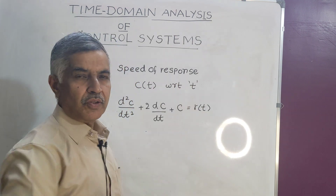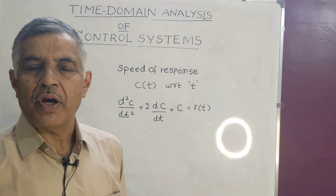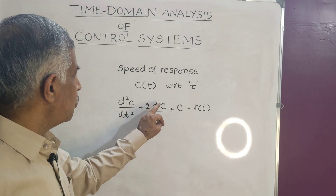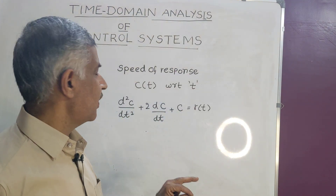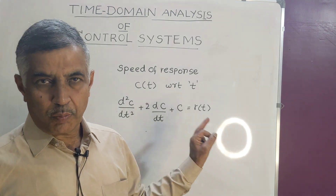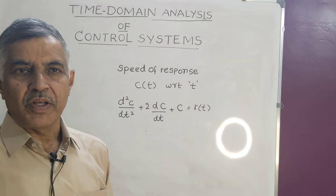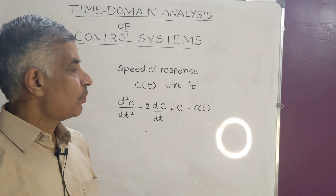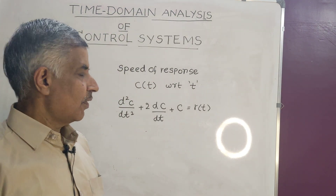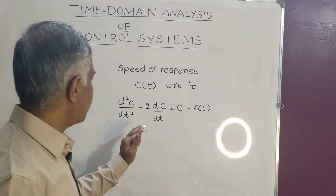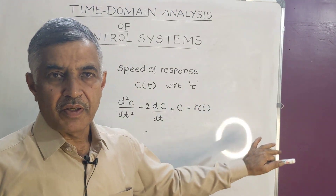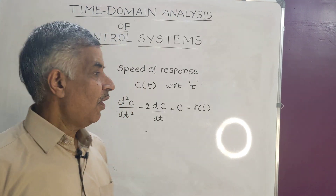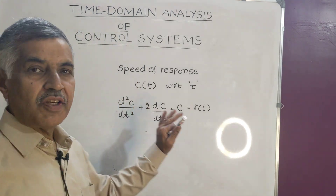This is a second order linear differential equation: d²c/dt² + 2·dc/dt + c = r(t), where c(t) is the output and r(t) is the input. Analyzing speed of response always starts with what is known as the modeling equation. Next, we have to solve this differential equation.